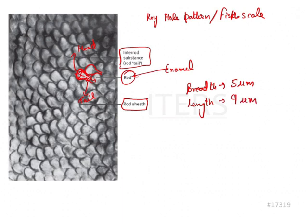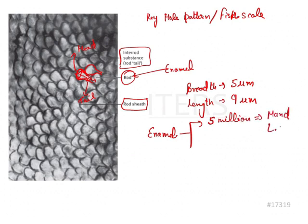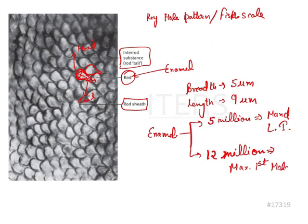Another important value about enamel rods: enamel rods are as few as 5 million, as seen in the mandibular lateral incisor, and as many as 12 million, as seen in the maxillary first molar. This is another very important value which can be asked in exams.